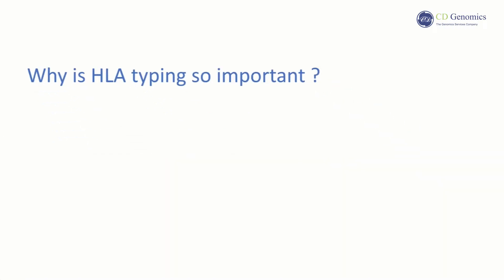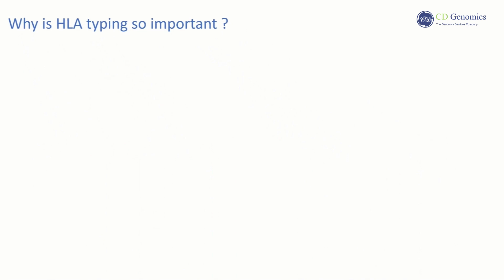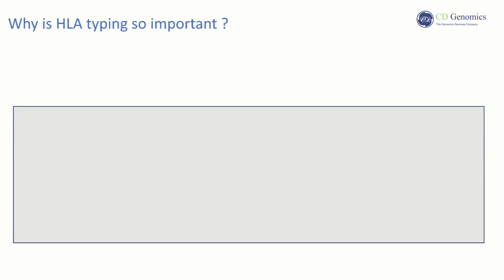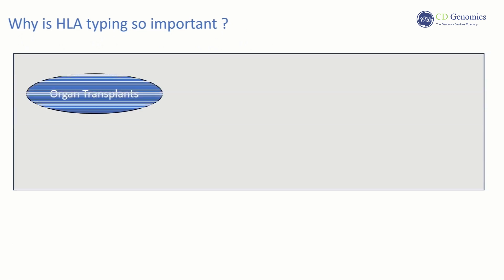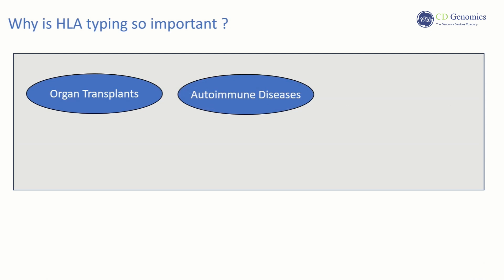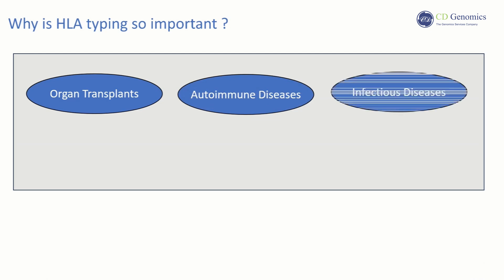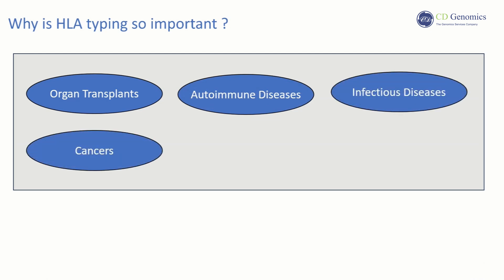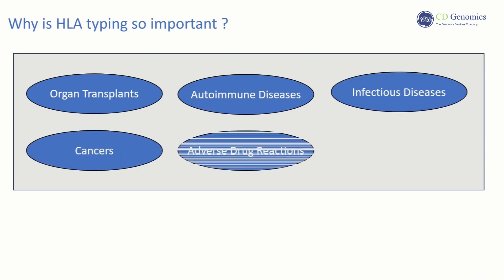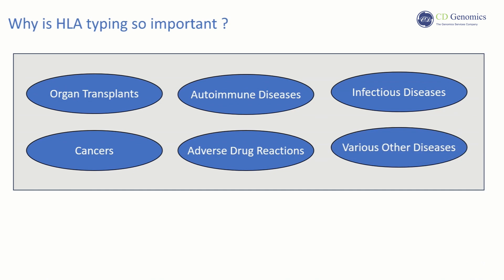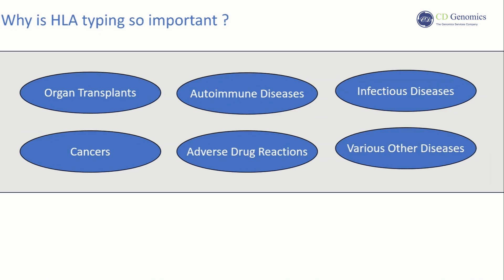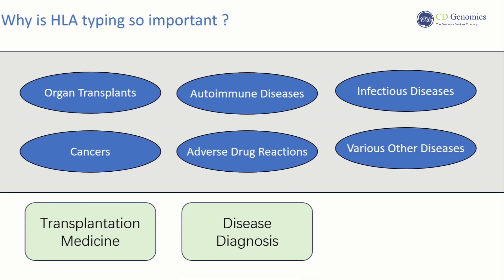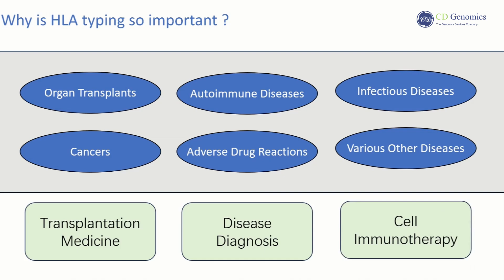In addition to organ transplants, HLA antigens are also associated with autoimmune diseases, infectious diseases, cancers, adverse drug reactions, and various other diseases. Therefore, HLA typing is widely used in fields such as transplantation medicine, disease diagnosis, and cell immunotherapy.